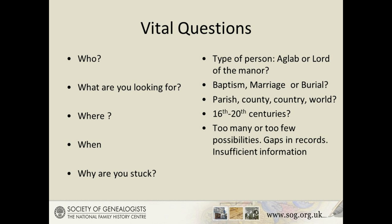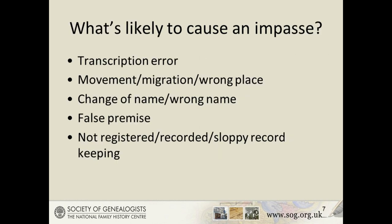Why are you stuck? Usually it's down to having too many or too few possibilities. Are there gaps in records or gaps in your knowledge? Do you simply have insufficient information to go any further at present? Think about what might have built that brick wall. Has there been a transcription error — can you check against the original record? Might it help to search other databases or search in a different way? Are we seeing evidence of migration, or are we simply searching in the wrong place? Has there been a change of name? Under English law you can call yourself what you like, providing you have no intention to defraud, and few formal deed poll changes are actually registered centrally.